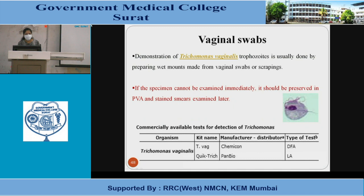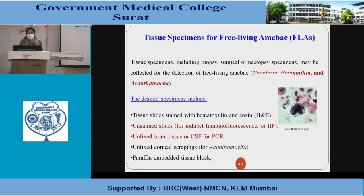Vaginal swabs: demonstration of Trichomonas vaginalis trophozoites is usually done by preparing wet mounts from vaginal swabs or scrapings. If specimens cannot be examined immediately, they should be preserved in PVA or stained for later examination. A commercial kit is available for diagnosis. Tissue specimens for free-living amoeba: tissue specimens including biopsy, surgical, or necropsy specimens may be collected for detection of free-living amoeba such as Naegleria, Balamuthia, and Acanthamoeba. Desired specimens include tissue slides stained with hematoxylin and eosin, unstained slides for indirect immunofluorescence, unfixed brain tissue or CSF for PCR, unfixed corneal scraping, and paraffin-embedded tissue blocks.